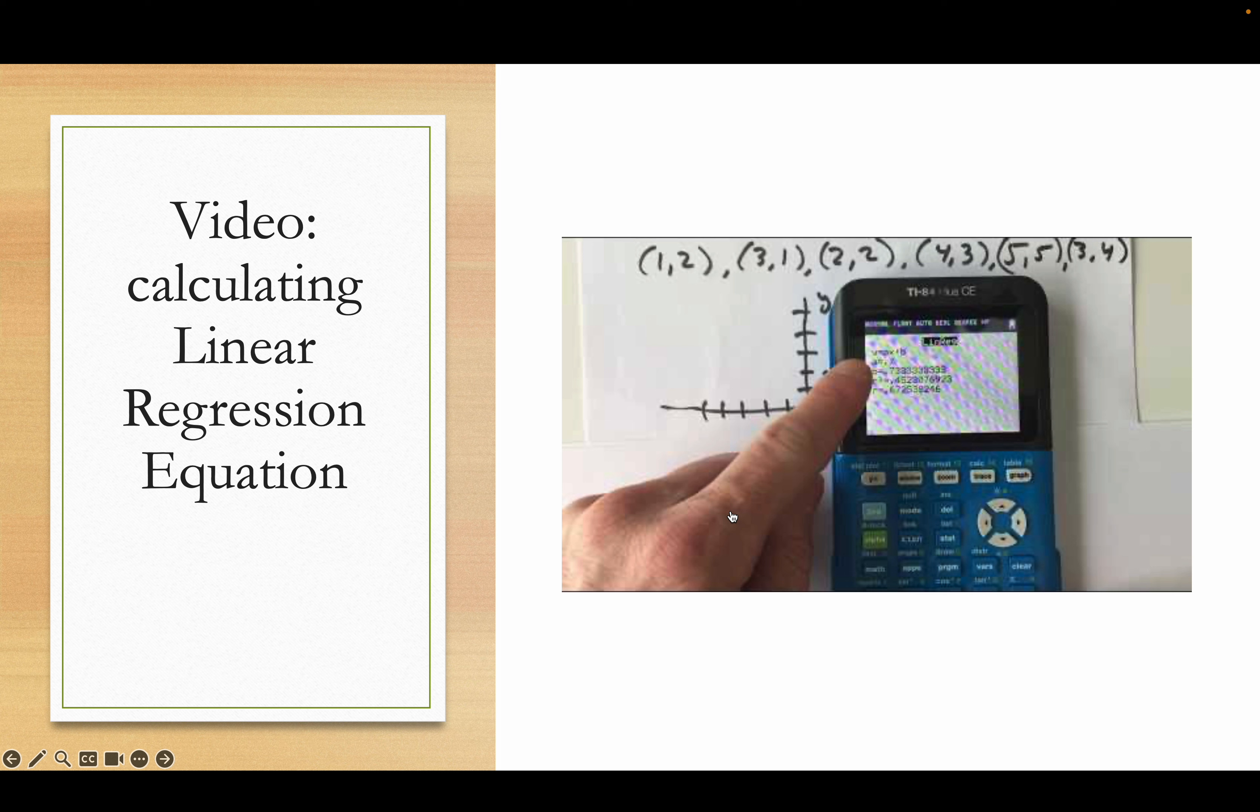Linear regression, enter, and you hit it a bunch of times. It's the fourth one down, linear regression y equals ax plus b. Then it says a is, it'll give you a value, and b is, it'll give you a value. So let's say it just said a equals 5 and b equals 10, then y equals 5x plus 10.